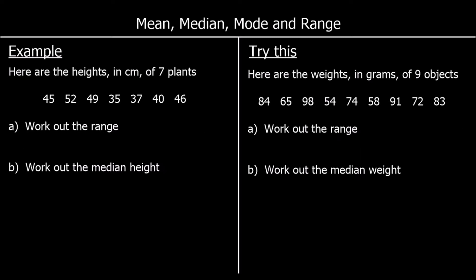Here's another example. We've got the heights of seven plants and they're not in order. The first question is asking for the range. The biggest number here is fifty-two, take away the smallest which is thirty-five. Fifty-two take away thirty-five is seventeen, so the range is seventeen.